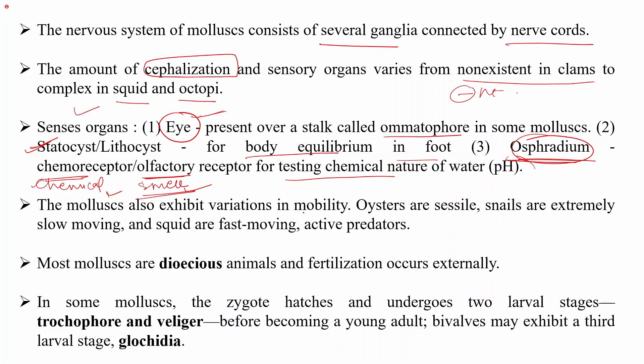Mollusks also exhibit variation in mobility. Certain mollusks are sessile — they are fixed and do not move. Snails are extremely slow-moving. Squids are fast-moving active predators. For example, oysters are sessile, feeding on planktons on the surface, while snails are slow-moving and squids are fast-moving active predators that must catch their prey.